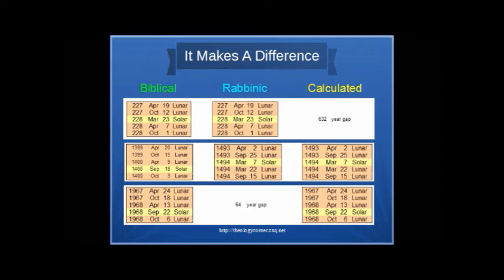As you can see, in the year 227, the calculated calendar didn't agree with both strands. In the year 1493, the calculated calendar agreed with the rabbinic strand. In the year 1967, the calculated calendar agreed with the biblical strand.